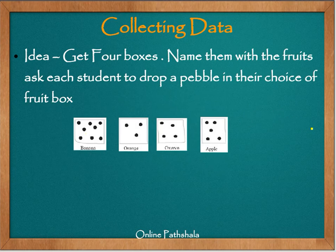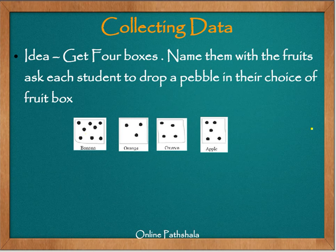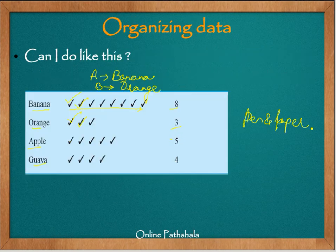So you can see from the previous approach how counting would have required around 200 times. With boxes it was reduced to 4 baskets, and now with paper and pen we can simply count ticks and get the information. Recording data in a proper manner actually simplifies the job and makes it faster to gather the required information from the data.